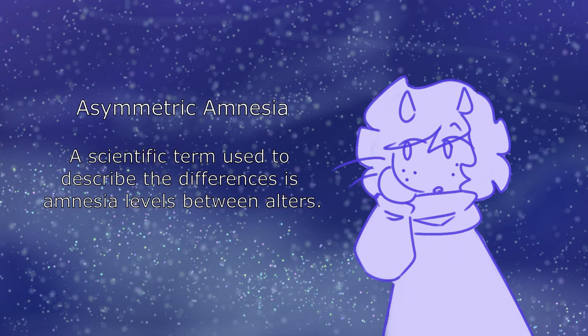All of these are different ways amnesia can present, but again, not all of the ways. Every system is different and will have differing ways amnesia presents itself. Even within the same system, amnesia can affect alters differently. One alter may experience blackout when the host fronts, and another may only have emotional amnesia of that same time period. This is known as asymmetrical amnesia.